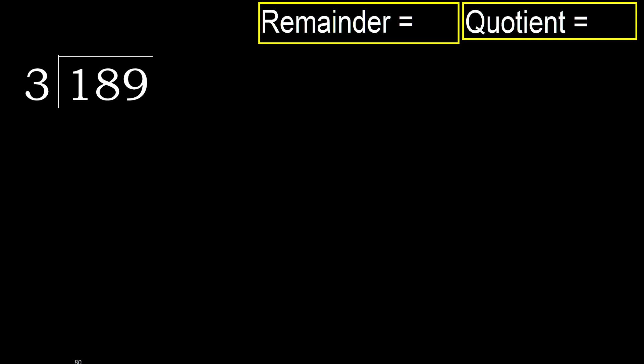189 divided by 3. 1 is less, therefore next. 18 is not less, therefore work with 18. 3 multiplied by which number is nearest to 18 but not greater?